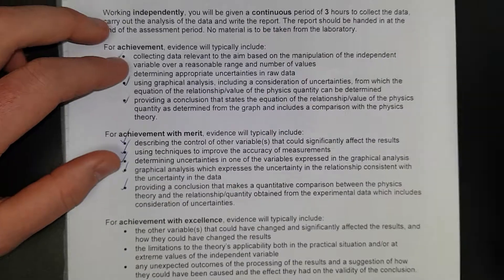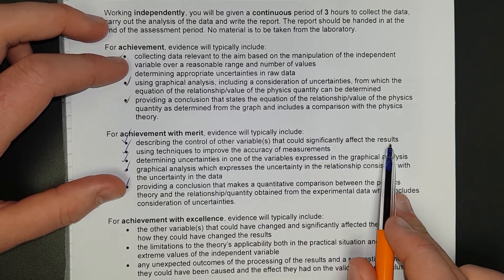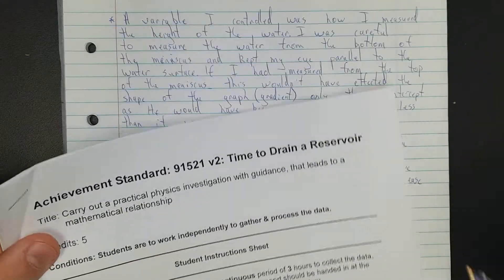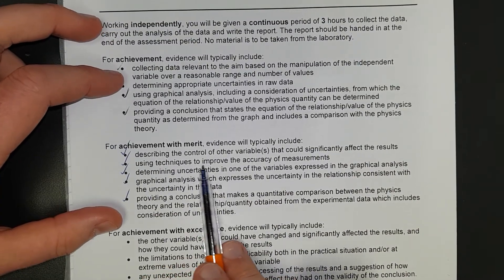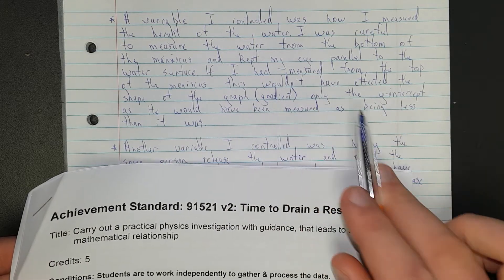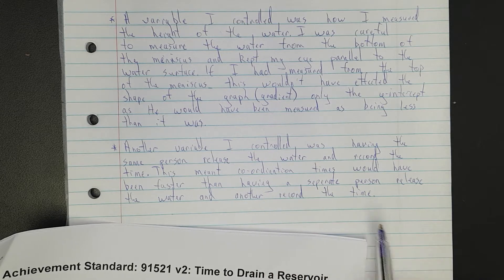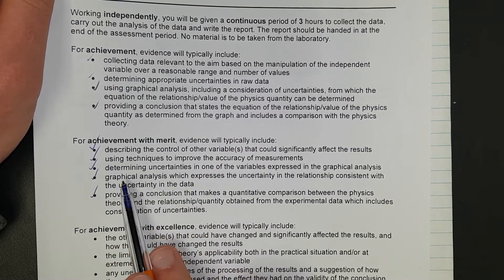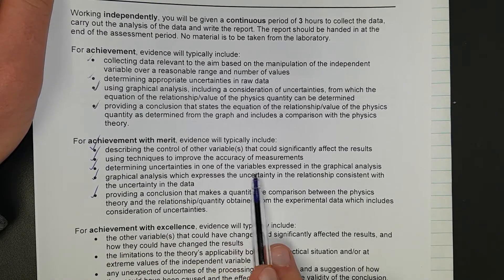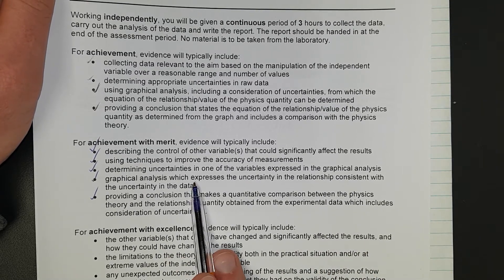Right, so we have described the control of variable that could have significantly affected the results. We did that clearly with the first one because if we didn't measure correctly they would have changed our gradient. We said that. Use techniques to improve accuracy of measurements. We said that by measuring parallel and measuring the bottom of the meniscus. And also having the same person that increased the accuracy. That's that one ticked. Determine uncertainties in one of the variables expressed in the graphical analysis with uncertainty in the data. We did that.